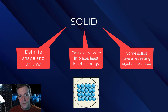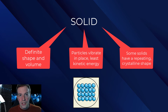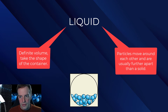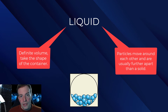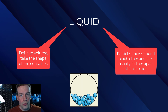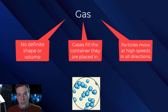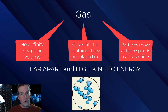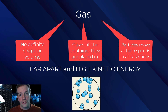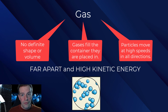Solids have a definite shape and volume. The particles don't have a lot of kinetic energy, but they're vibrating in place, and they can be found in crystalline or amorphous structures. Liquids have a definite volume but not a definite shape — they'll take the shape of whatever container you pour them into, and the particles are moving around each other. In a gas, there is no definite shape or volume; the particles are going all over the place, have high energy, and fill whatever container you put them into.